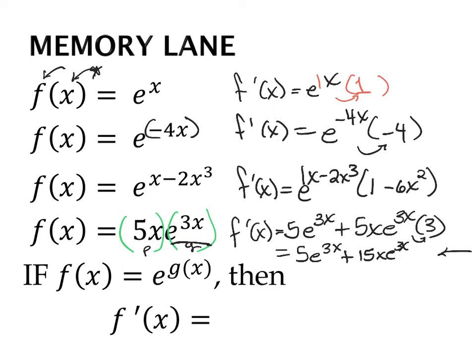So in general, when we're given a function whose base is e, the derivative is going to be: keep the exact same function the same, and then multiply it by the derivative of that exponent.